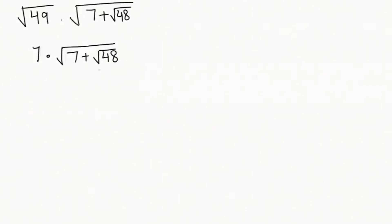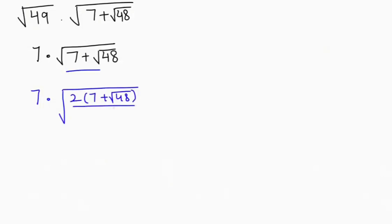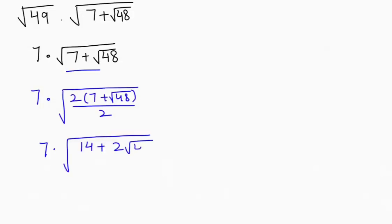Next I'm going to express this term in the form 7 times root of 2 times root of 2 times (7 plus root of 48) over 2. If we cancel out the 2 we get the same expression as above. So I'm going to write this as 2 times root of 7 times root of (14 plus root of 48) over 2.